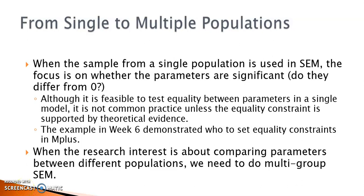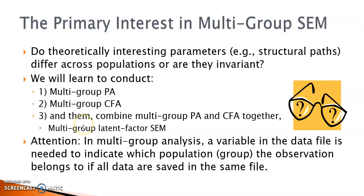Oftentimes we are interested in making comparisons between different populations. For example, a researcher might want to know whether the factors that impact students' math performance function in the same way for both boys and girls. When the research interest is about comparing parameters between populations, we need to do multi-group SEM. I'm going to use three examples to show you how to do a multi-group path analysis, CFA, and latent factor model respectively.